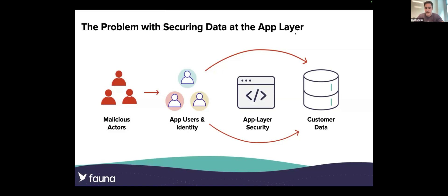To set the stage for our discussion today, let's address one of the most critical challenges in data security: the reliance on the application layer for protection. This approach can create significant vulnerabilities because once a malicious actor obtains someone's identity and credentials, they can bypass application layer security and directly access the database, exposing sensitive customer data. Identity has become a key target for hackers because it provides a gateway into your systems. To fully protect against this, it's essential to understand permissions and the full scope of access — knowing who can take what action on which data at what time. Implementing security directly at the database layer ensures that even if an identity is compromised, the data remains protected through granular permissions and access controls.